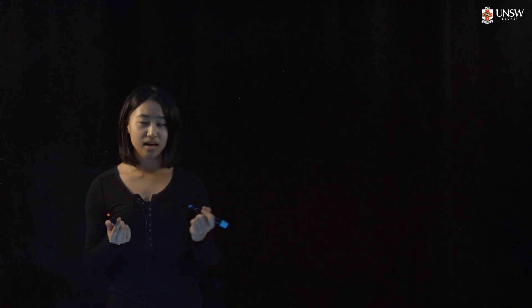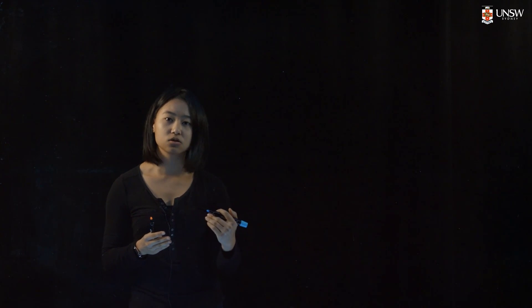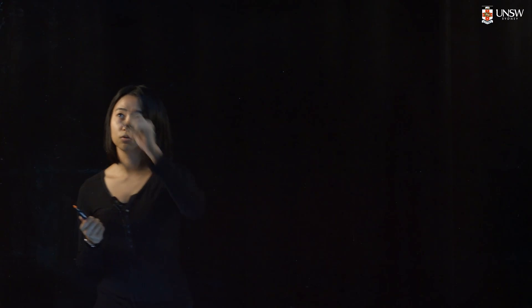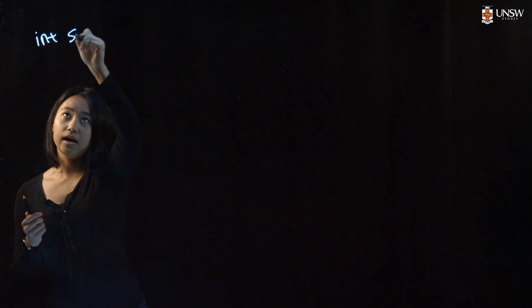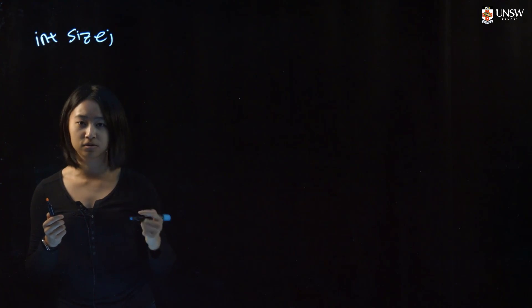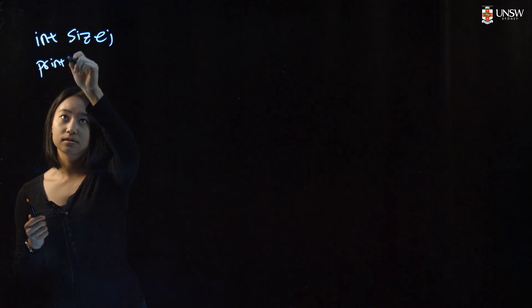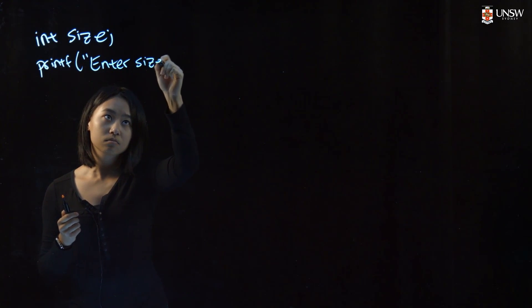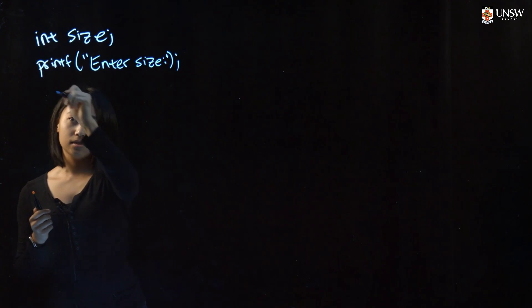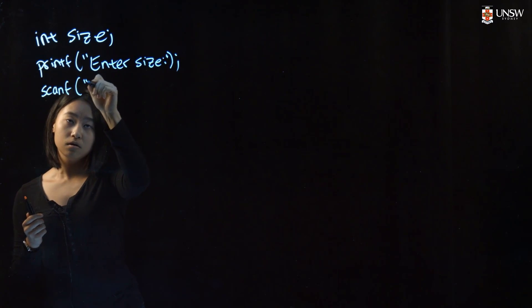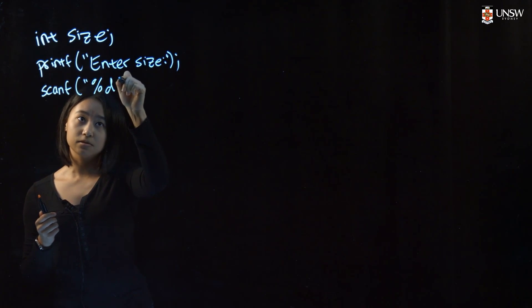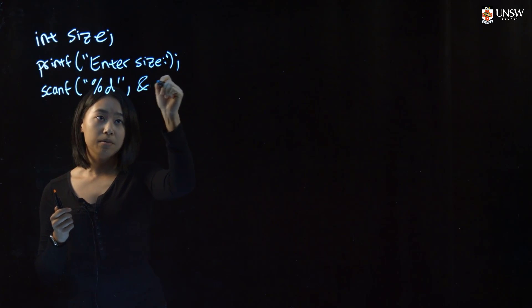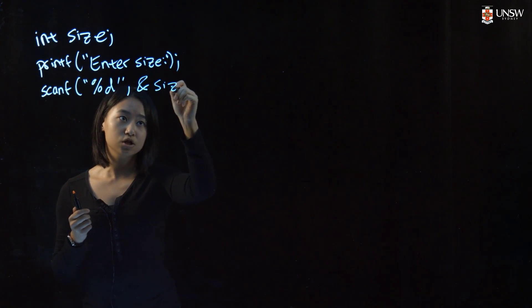Suppose I want you to make a program that asks the user to enter a size, and then you have to make an array of that size that the user inputted. So if you're starting to write your program, you'd probably write something like int size — a variable to store the size that the user inputs. You prompt the user for that size, and then you use scanf to read it in. Use %d because that's the format specifier for integers.